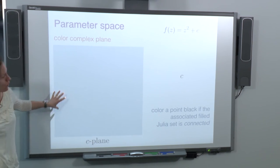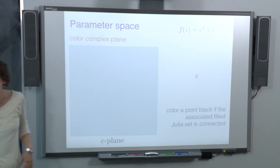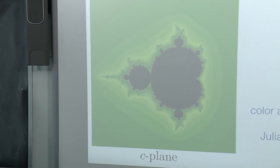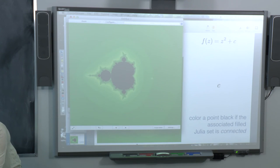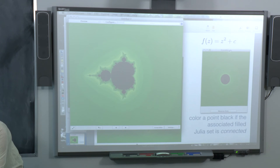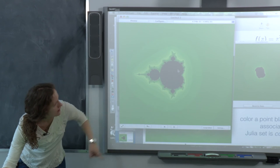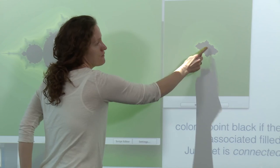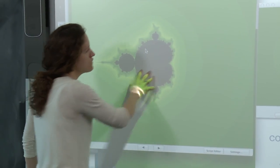We color a point in the parameter plane black if and only if the associated filled Julia set is connected — in one piece. When we do that, we get the Mandelbrot set. As I move the cursor around in the Mandelbrot set, you can see the filled Julia sets change shape. When the cursor is inside the Mandelbrot set, the filled Julia set is connected, and as soon as you leave the Mandelbrot set, the filled Julia set disconnects.